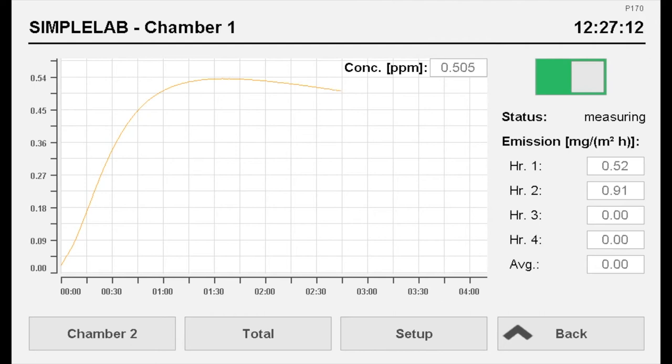SimpleLab simultaneously calculates the gas emission values of the individual hours and the total gas emission value from the measurement data obtained. After the four-hour test time has elapsed, the test result is displayed directly. This makes operation very simple and can also be done by non-laboratory personnel.